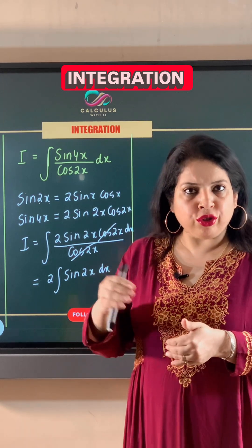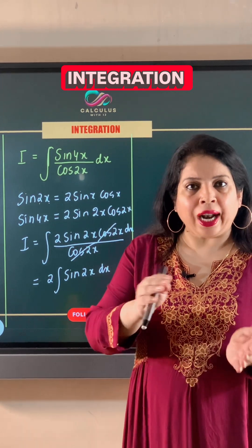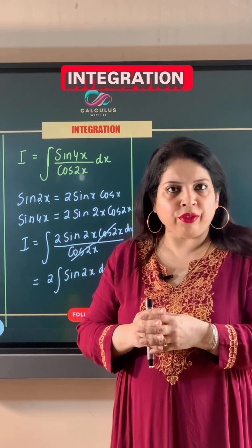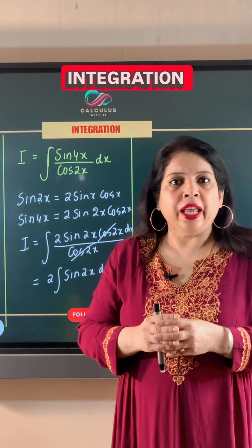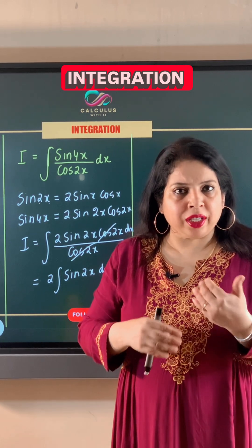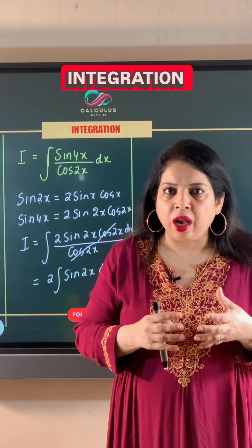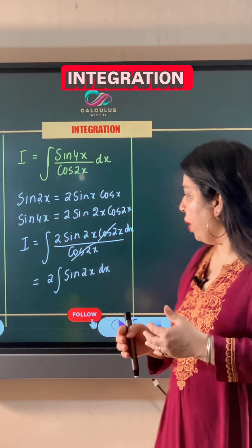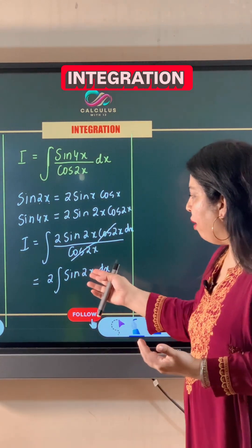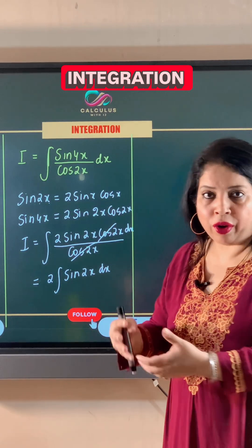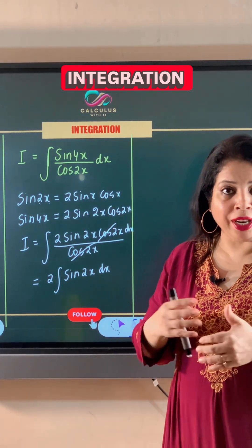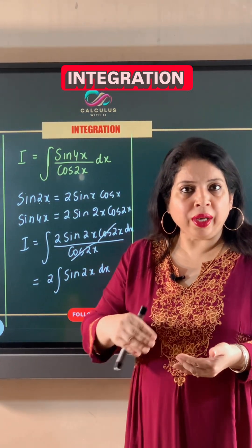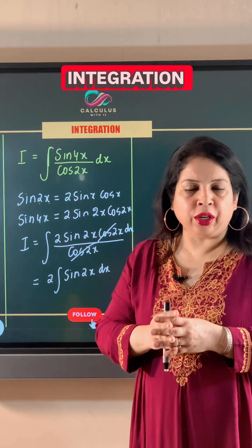then the coefficient of x, which is 2, will come in the denominator according to the laws of integration. This understanding allows us to avoid substitution. So even if the angle is 4x, then 4 will come in the denominator.